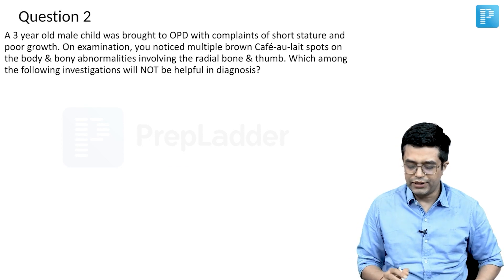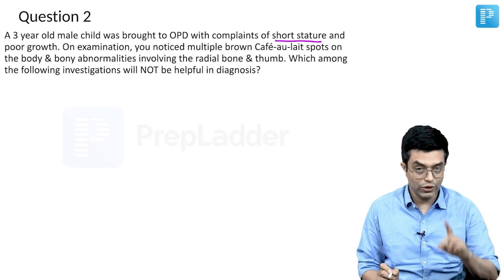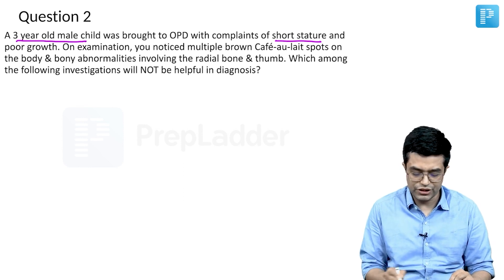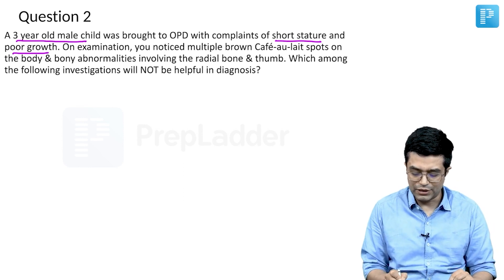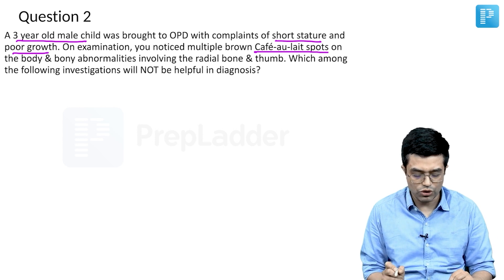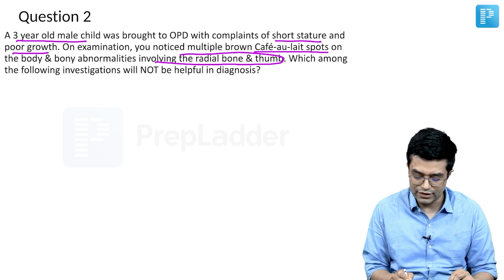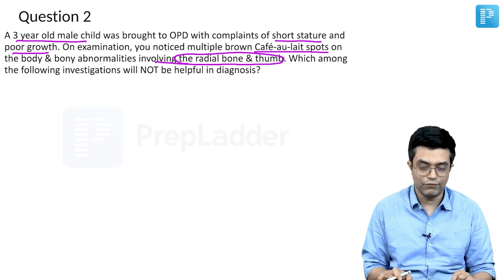A three-year-old male child was brought to OPD with complaints of short stature. Keywords: male child, three-year-old, short stature, poor growth, multiple brown café-au-lait spots on the body, and bony abnormalities involving the radial bone and thumb.